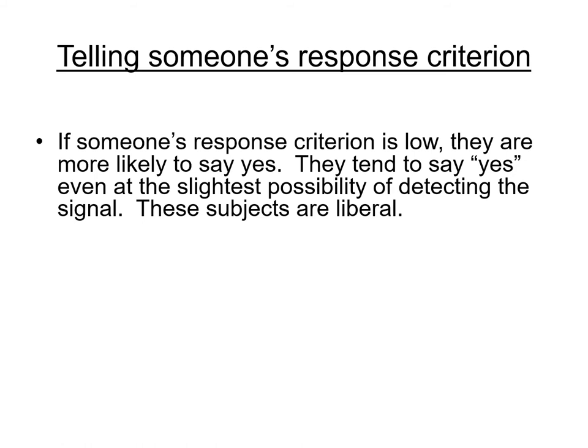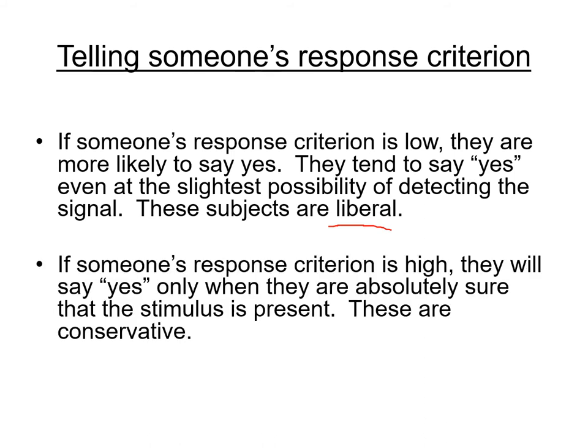If someone's response criterion is low, they have a very low threshold and are very likely to say yes. These people tend to say yes even at the slightest possibility of detecting a signal — they are called liberal subjects. On the other end, if someone's response criterion is high, they will only say yes when they're absolutely sure the signal is present — these are the conservatives. Those in between are neutral.